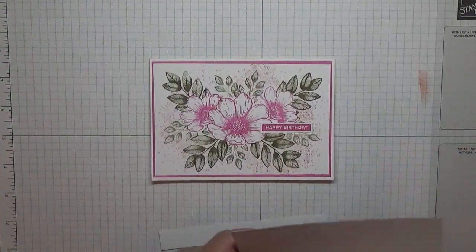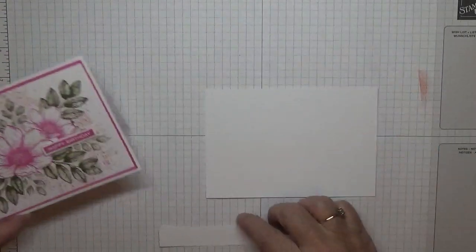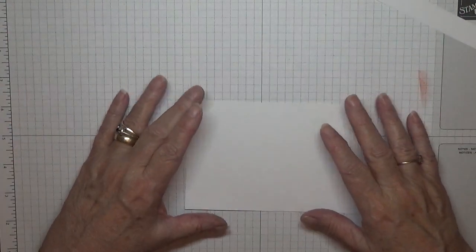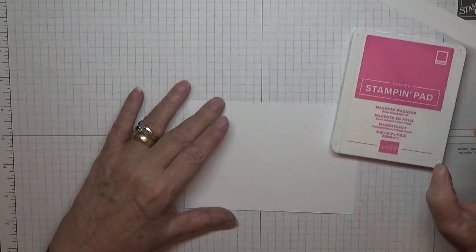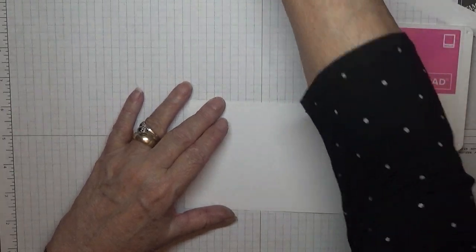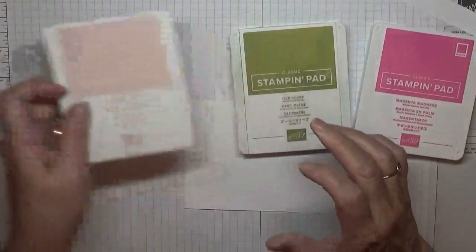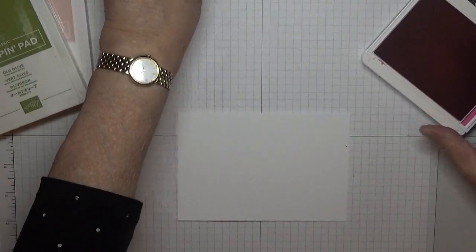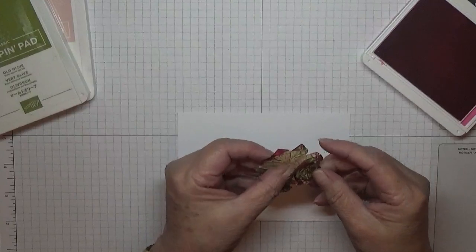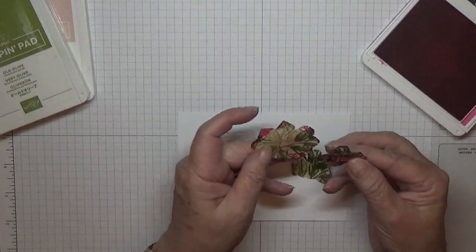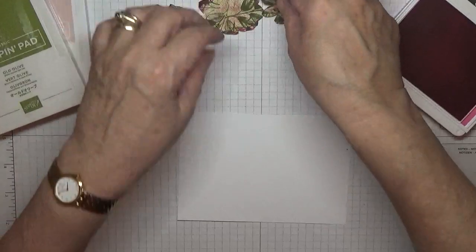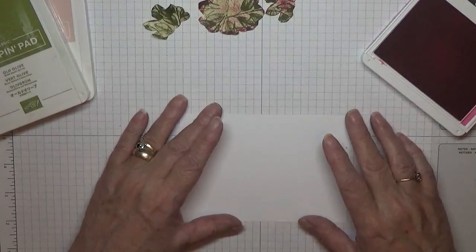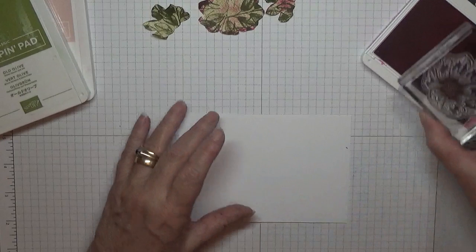So let's get our card pieces together. I'll be using Magenta Madness, Old Olive, and Blushing Bride as my three colors for today. So let's get started. I've already got some masks as we'll be using masks for the flowers, and I have got my three cut out and stamped over.